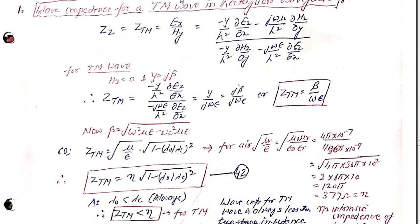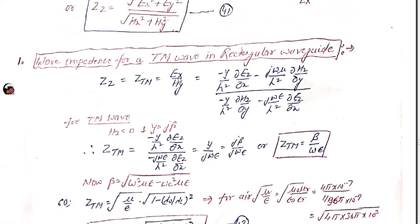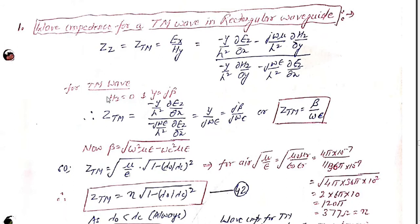Let us consider first the case of the TM wave. The wave impedance is the ratio of Ex upon Hy. As we have already calculated the values of Ex and Hy for the TM wave, we are going to replace those values. You can see how we calculated these values in my previous lectures where I derived these particular equations. This then represents the wave impedance.